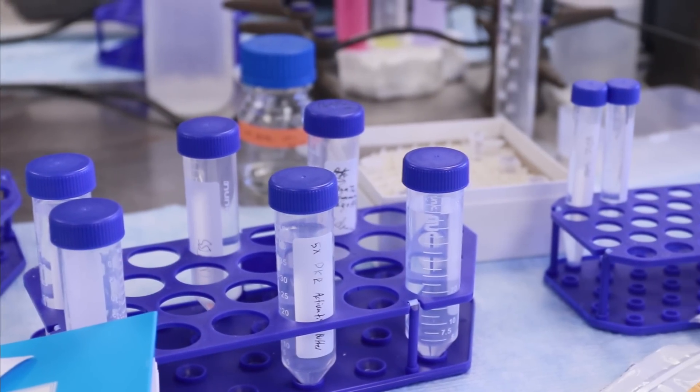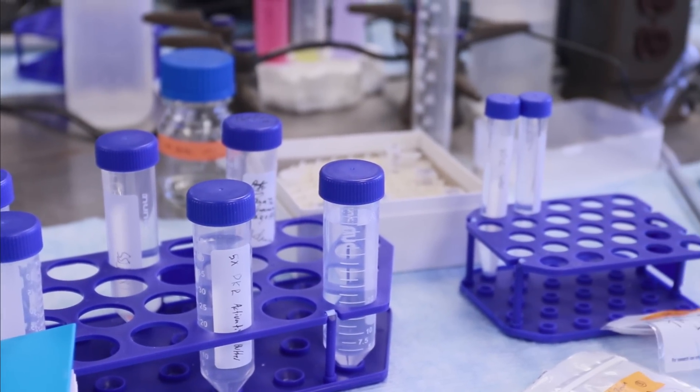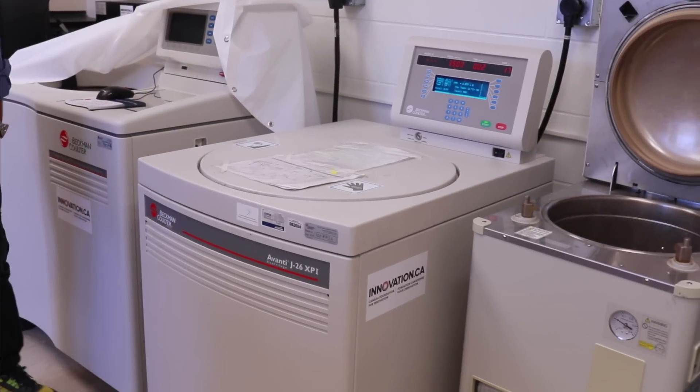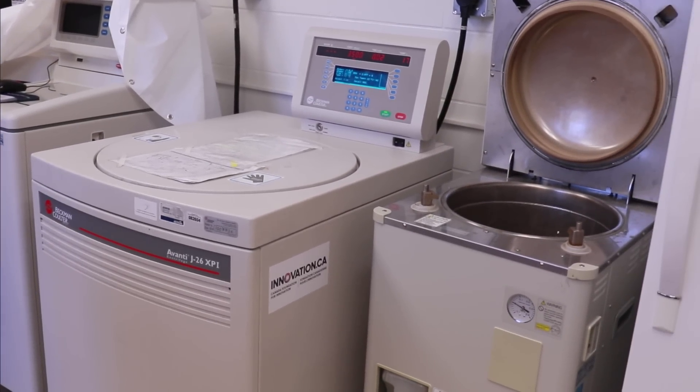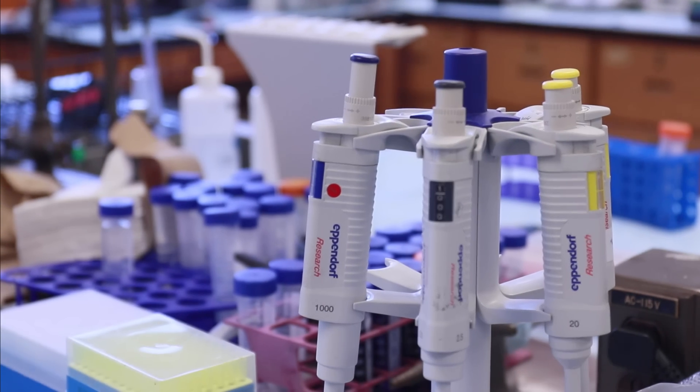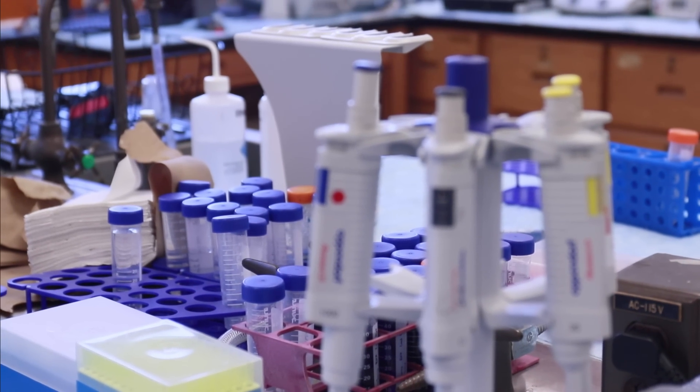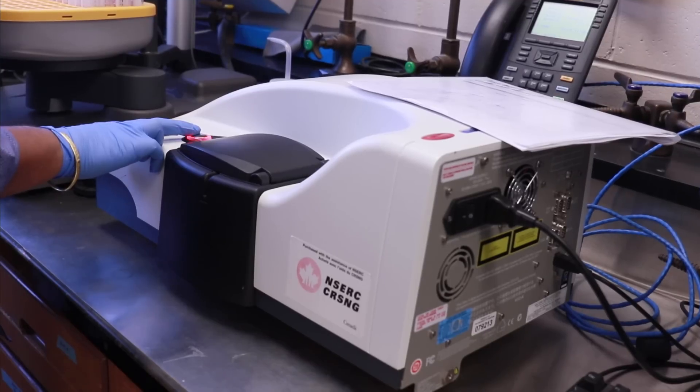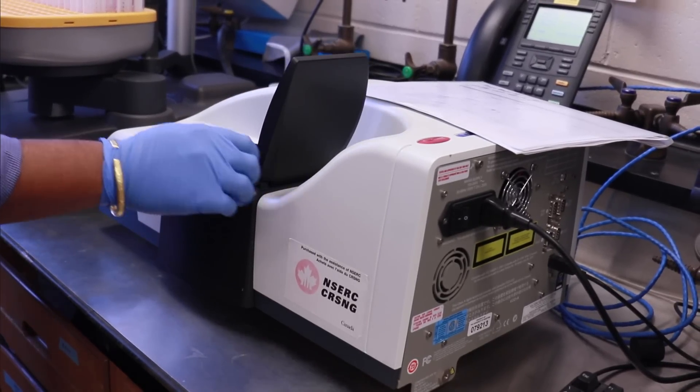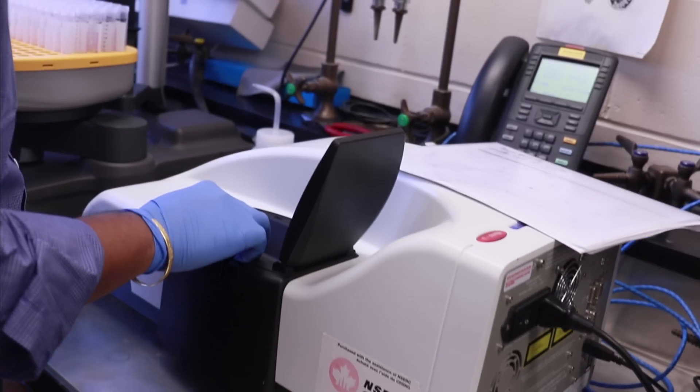After this activation and binding characterizations we go on to see whether we can characterize them using more advanced techniques like analytical ultracentrifugation. This technique enables us to see the binding and unbound fractions of these RNA protein. Before we do analytical ultracentrifugation or the subsequent experiments on solution conformation we check their purity and monodispersity using dynamic light scattering.